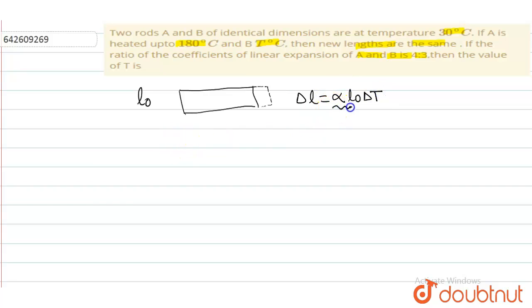Since initial length was same and the final length is same because it is given they have identical dimensions and it is also same, the new lengths are same. It means change in length will be same. It means delta l1 is going to be delta l2.